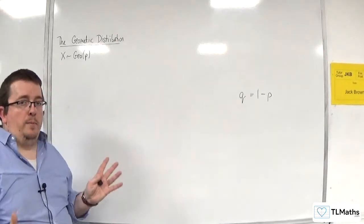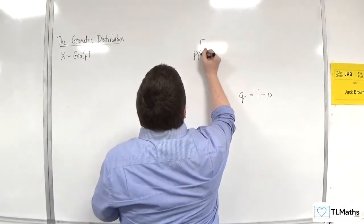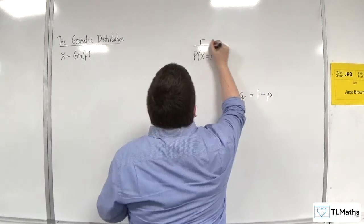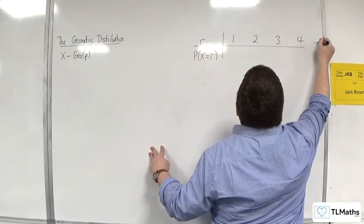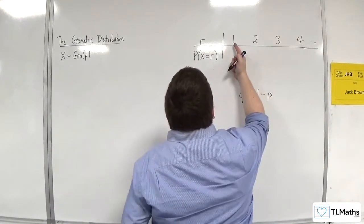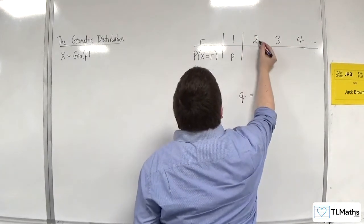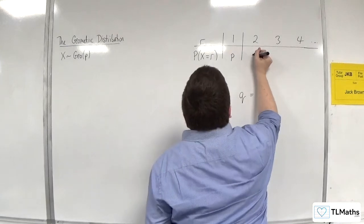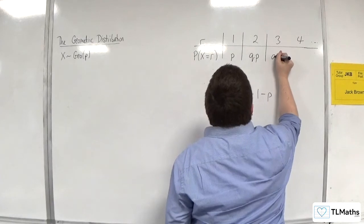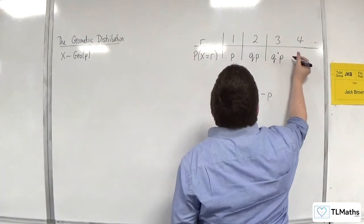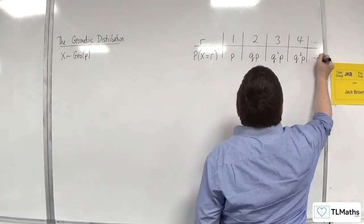So, if I was to write out the probability distribution in a table, it would look like this. You'd have r and probability of X being equal to r. And the values of r can take 1, 2, 3, 4, etc. Now, the probability of X being equal to 1 is just p. The probability of X being equal to 2 is 1 minus p times p, so qp. The probability of X being equal to 3 is q squared times p. And the probability of X being equal to 4 is q cubed times p, and so on.